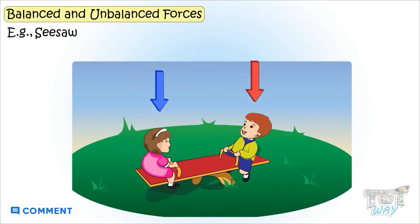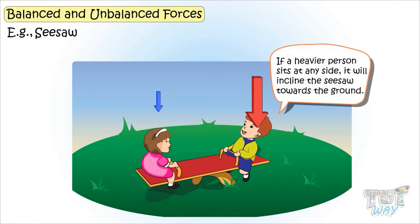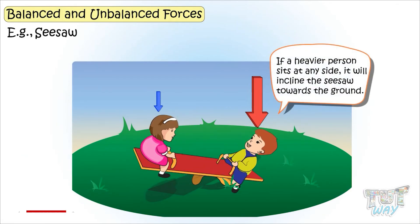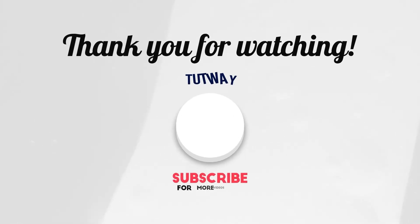Here is an example of a seesaw. It will stay balanced if the weight of both children is the same, or the same force is applied at both ends. If a heavier person sits on any side, it will incline the seesaw towards the ground — unbalanced forces are now applied to the seesaw, so the seesaw moves.